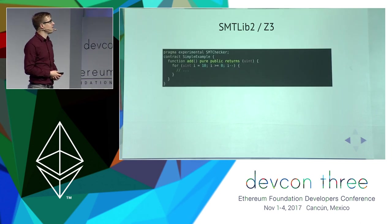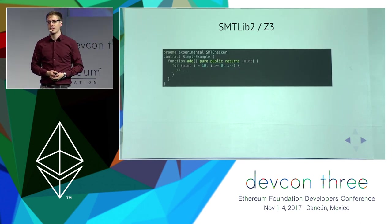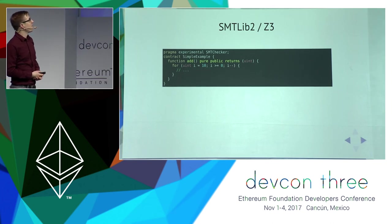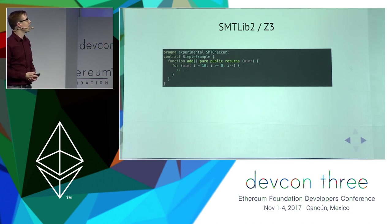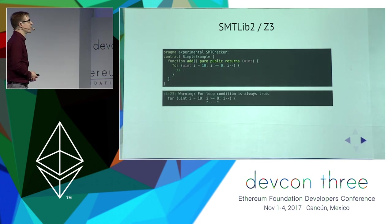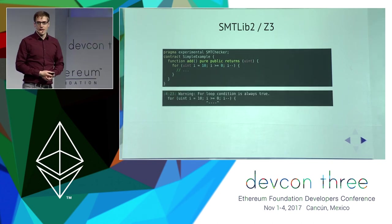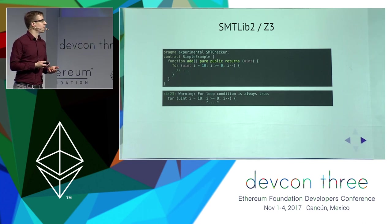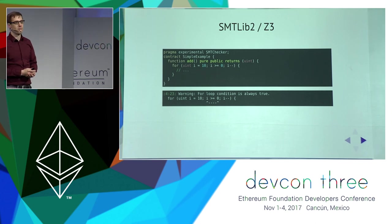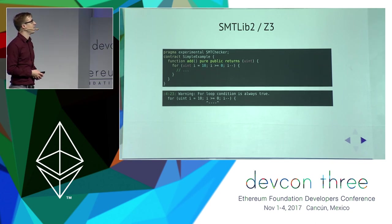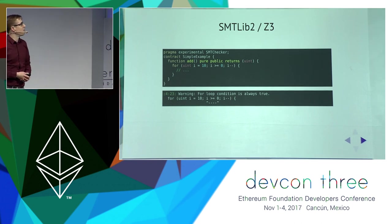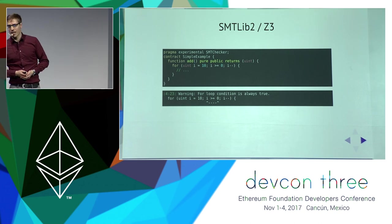Another example is taken from the underhanded Solidity coding contest: a loop that used an unsigned variable and decreased it but checked against greater-than-or-equal-to zero. Of course this loop condition is always true. That can be detected from the type of the variable alone and you don't really need an SMT checker, but it was a simple example — the SMT checker can handle much more complicated conditions.